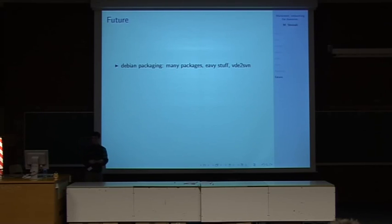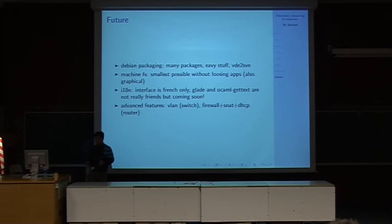And what we see for the future, we are currently working on Debian packaging. That is almost done, although we have some problems. Because we have some really heavy stuff to package, for example a file system. And we also rely on other software. So we are waiting for the development cycle of VDE, etc. So it's quite complicated. We are working on a machine file system to make them even smaller. And I'm working on internationalization. And we are putting in mind some advanced features like VLANs, Firewall, NAT and DHCP for routers. And we are also thinking of new devices. For example, IP phone for SIP and stuff like that.